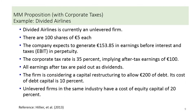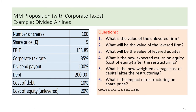Next, we shall apply the formulas we have learned in an example. This example on Divided Airlines is modified from your prescribed textbook by Hillier, 2013 edition. I have summarized the brief information about the company and its consideration for a capital restructuring. The table in blue summarizes the key information about Divided Airlines. We are going to answer five questions. I hope you will pause the video and try on your own first — the suggested answers are listed at the end of the slide.